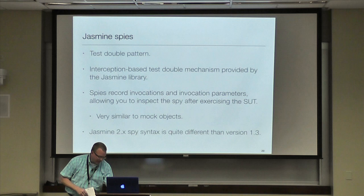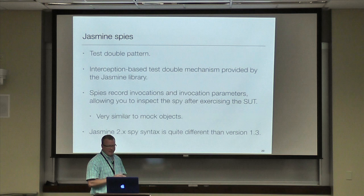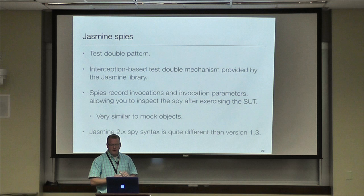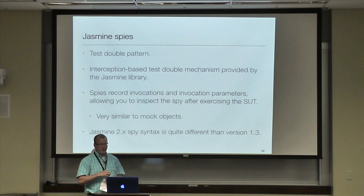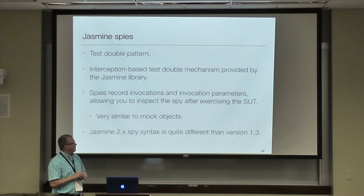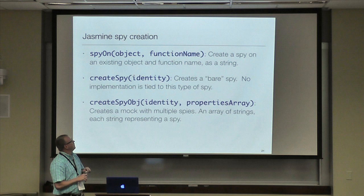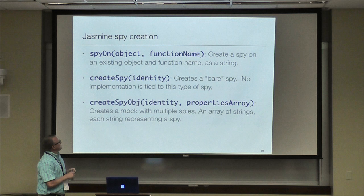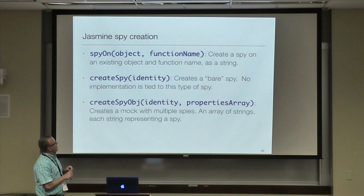A big feature of Jasmine is the spy functionality. It's basically an interception-based test double mechanism that the Jasmine library provides, so you don't have to go out and use Sinon or something like that. It's very similar to mock objects in other programming platforms. The Jasmine 2 spy syntax is quite a bit different than the version 1.3 spy syntax. There are a couple of different ways to create spies — I mostly use `spyOn` since I typically know the object and function name I want to spy on.